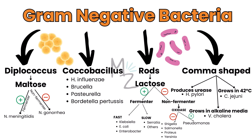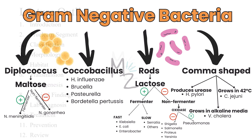Comma-shaped bacteria are further subdivided based on certain criteria: if a bacterium produces urease, it's H. pylori; if it grows in alkaline media, it's Vibrio cholerae; and if it grows at 42°C, it's Campylobacter jejuni. Videos on some of these bacteria are available on the channel.